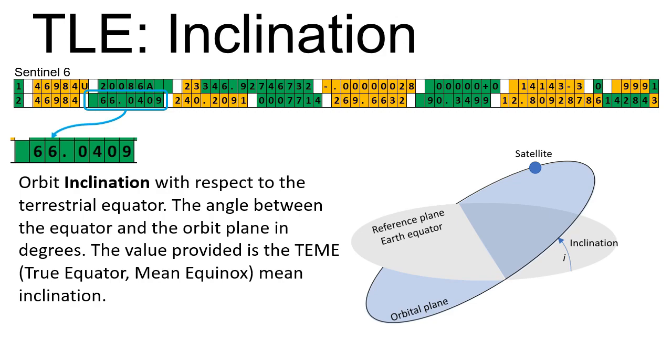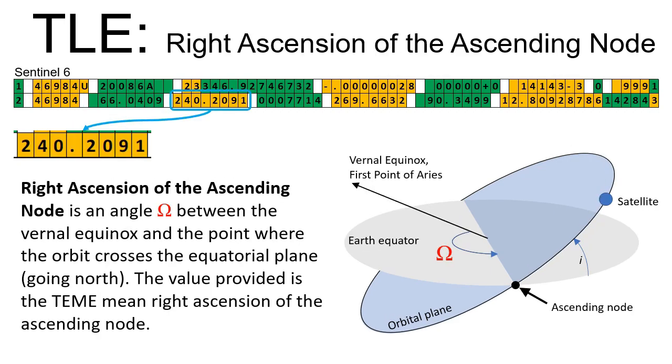Orbit inclination with respect to the terrestrial equator. Right ascension of the ascending node is an angle between the vernal equinox and the point where the orbit crosses the equatorial plane.